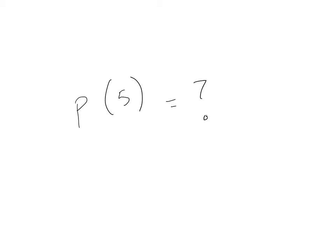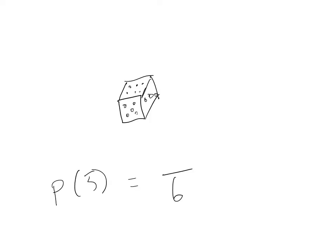We use the notation shown here to describe probability. P represents probability, and whatever comes in the parentheses after P represents the event that we're interested in. When we roll a six-sided dice, there are six equally likely outcomes. One of those outcomes is a five, so our probability of rolling a five is one over six, or 0.166 repeating.